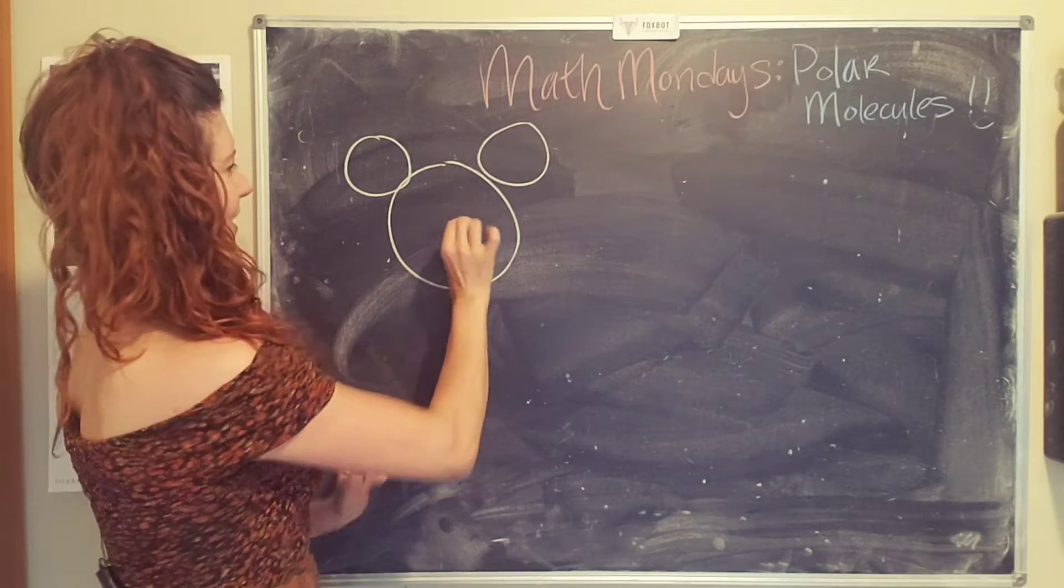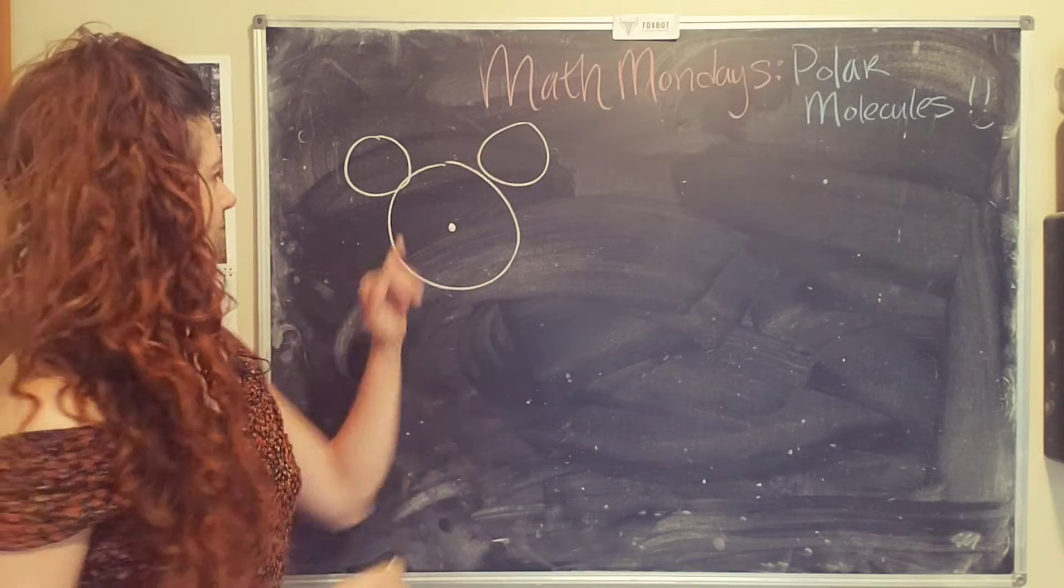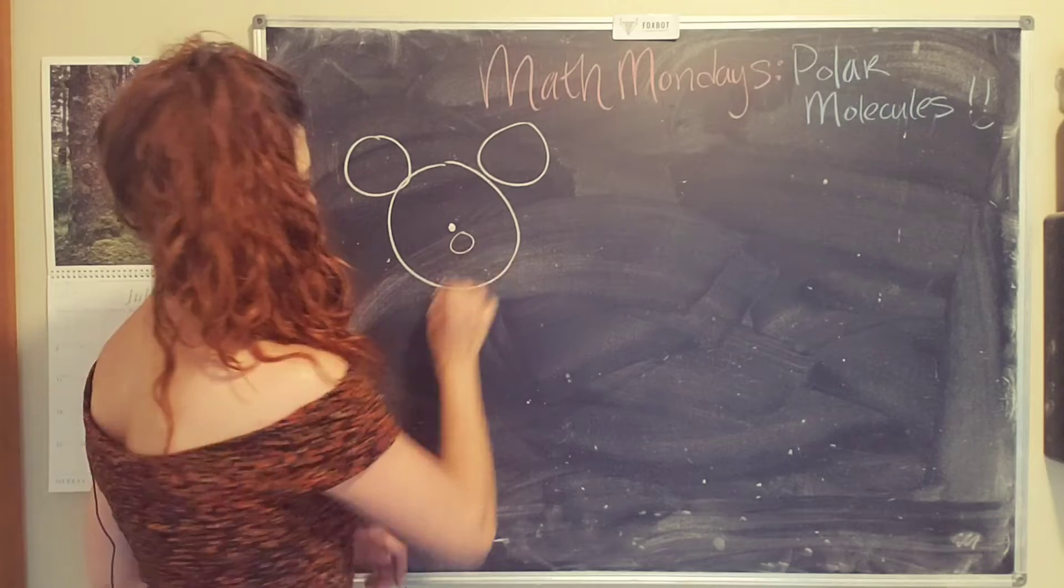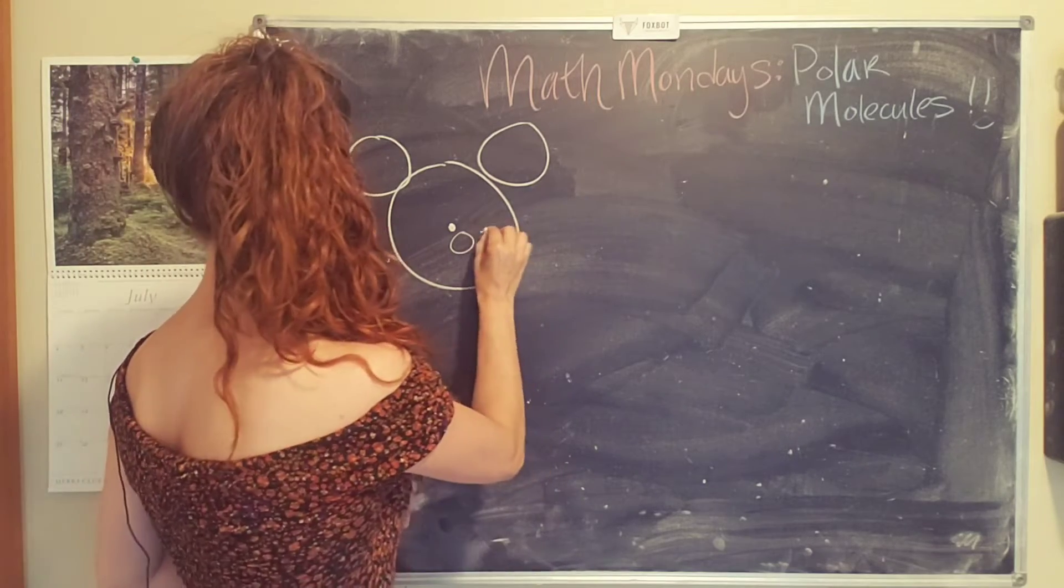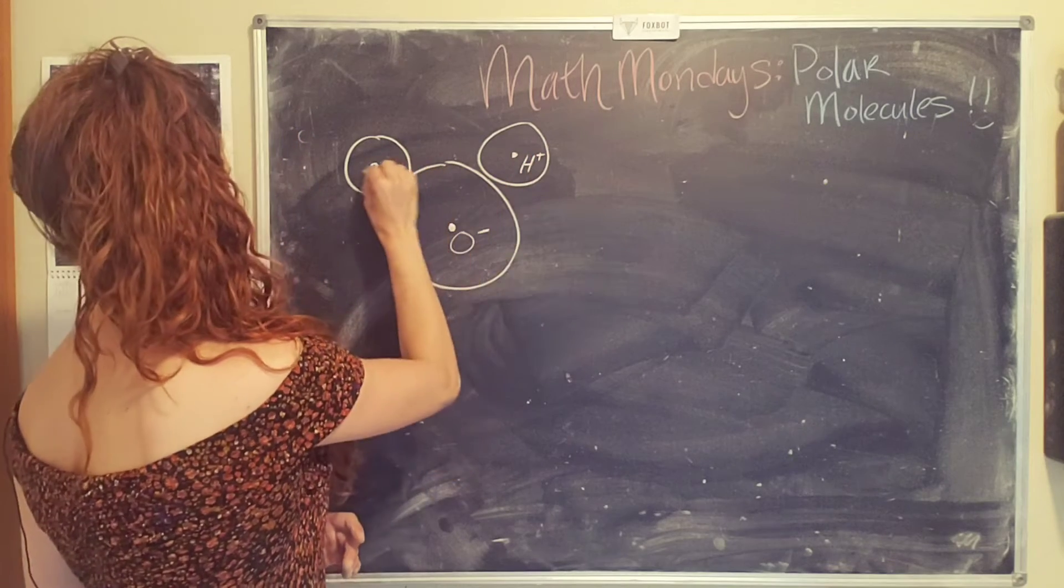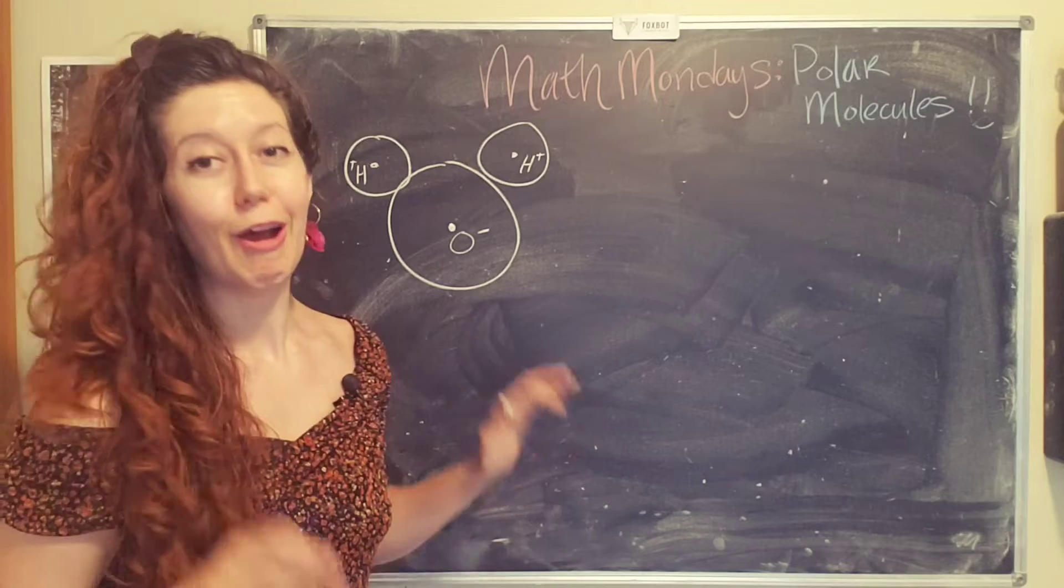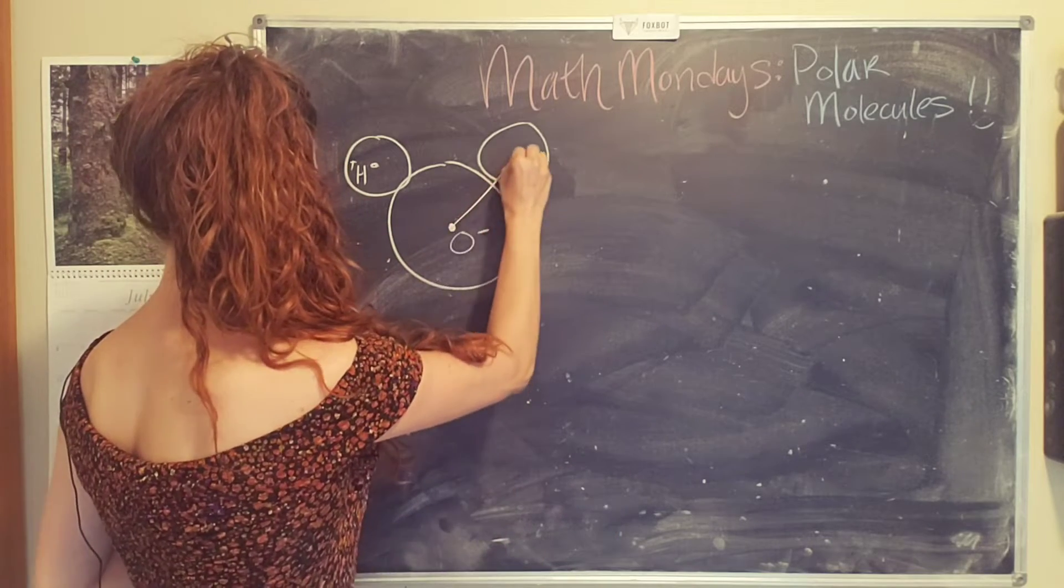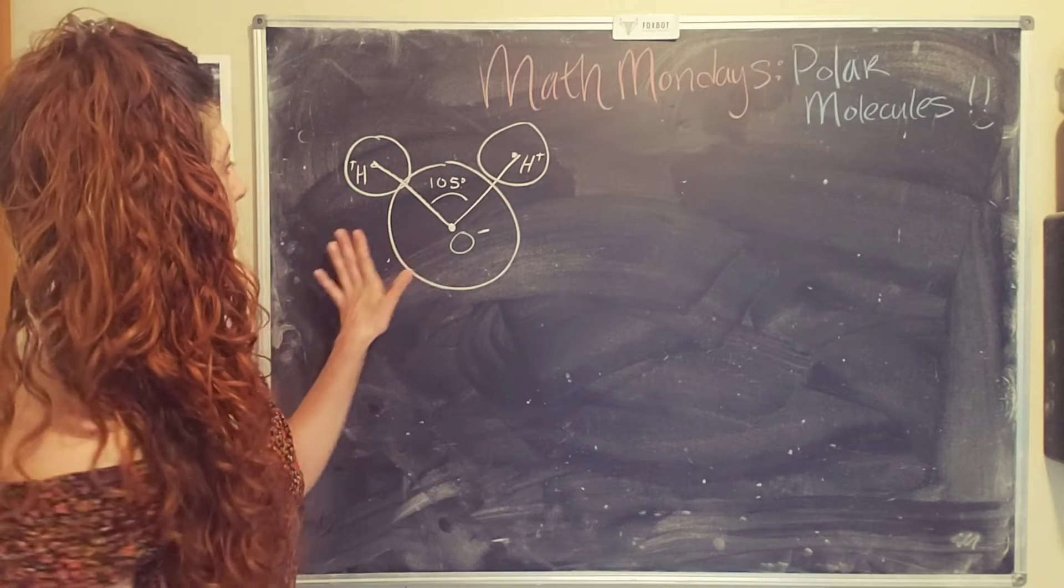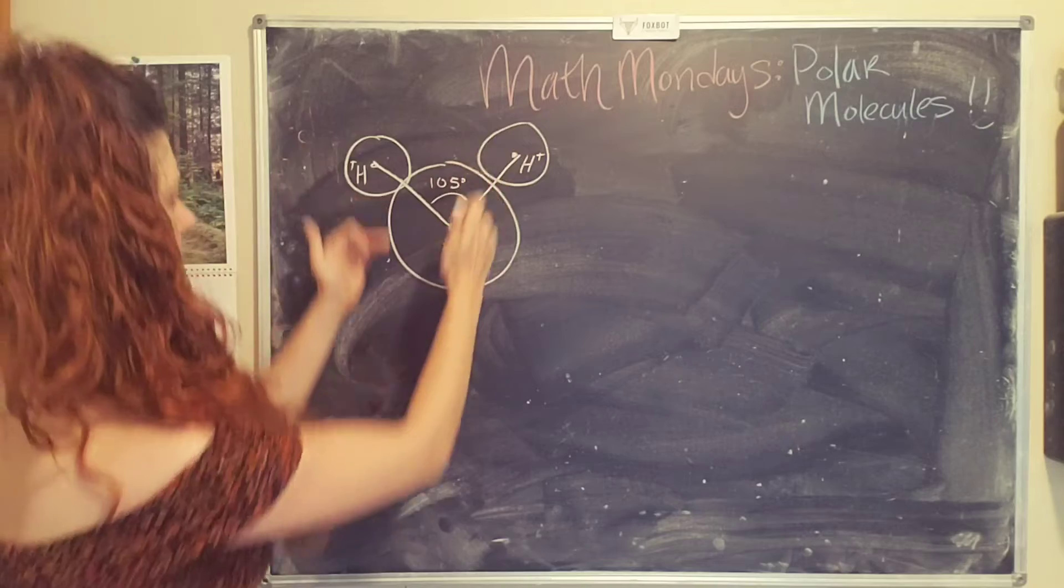Okay, so we have one Mickey Mouse here, we have a Mickey Mouse head. So in a water molecule, you have the large oxygen, where the negative charges, the electrons like to cluster. And then you have your hydrogen atoms, which is where you end up with a lack of electrons, or a surplus of positive charge. In this angle, this angle is 105 degrees. And so this is already polarized. The positive charges are up here, and the negative charges are down here.